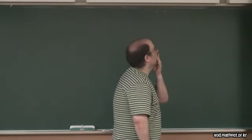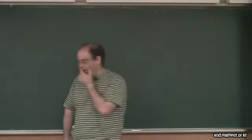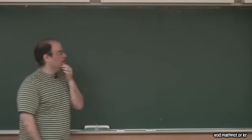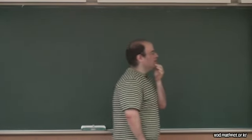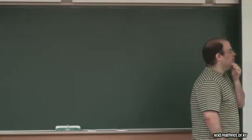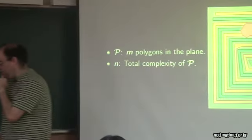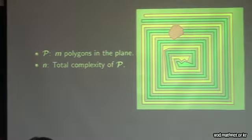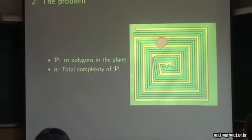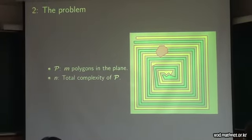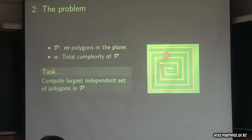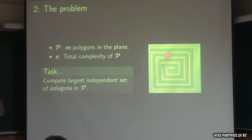So the problem: we have a set of polygons in the plane. The polygons can be very complicated, tangled, et cetera. Let n be the total complexity of the polygons that are given. We want to compute the largest independent set of polygons — namely, we want to find a subset of the polygons such that no pair of them intersect.